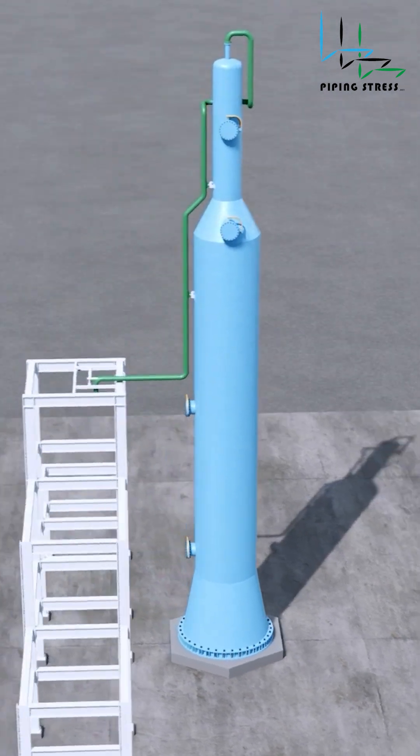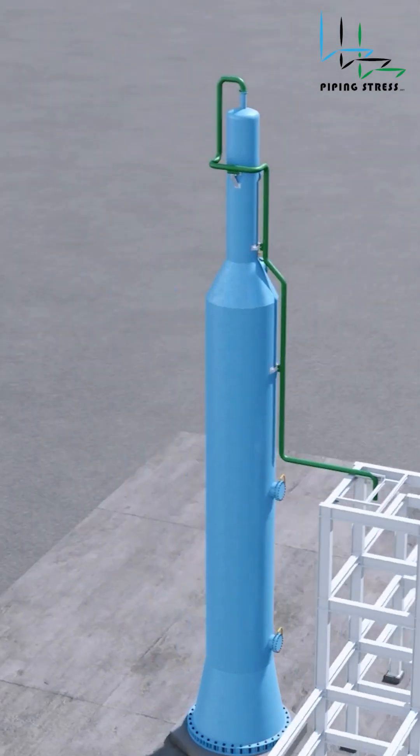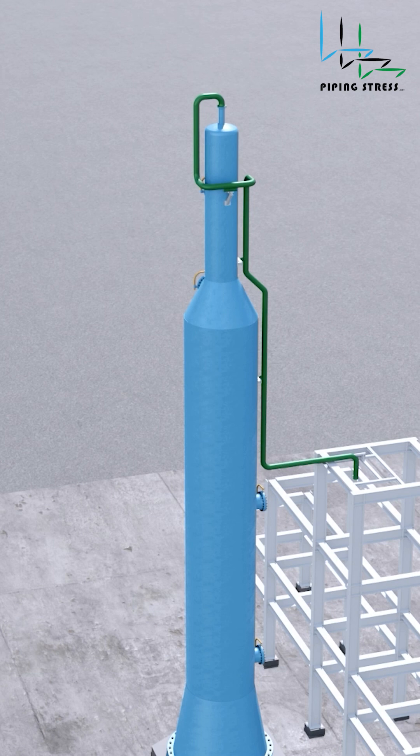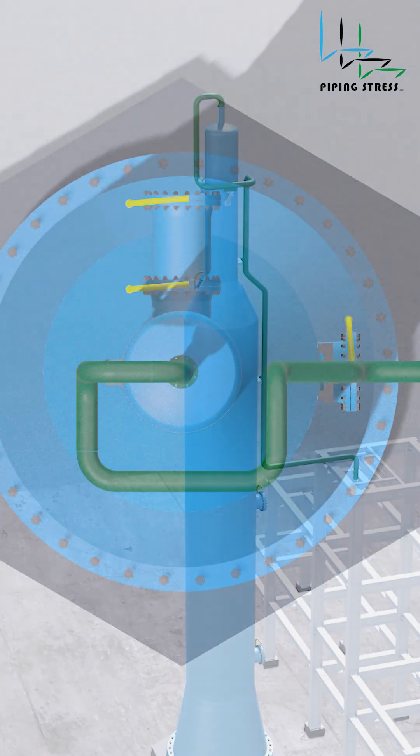Instead, it would be better to adjust the routing of the pipe going downward in a way that follows the shape of the equipment. In this way, a natural expansion loop is created. This natural loop results from the change in direction of the pipe that matches the shape of the equipment.